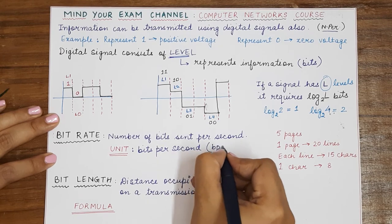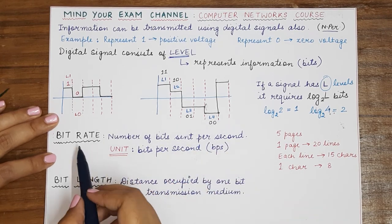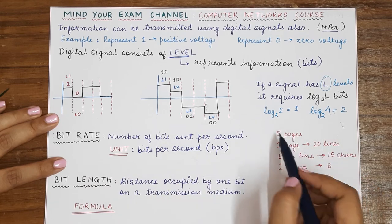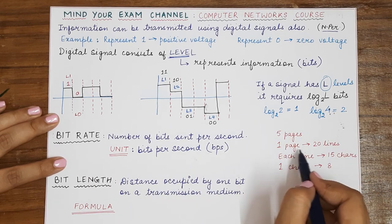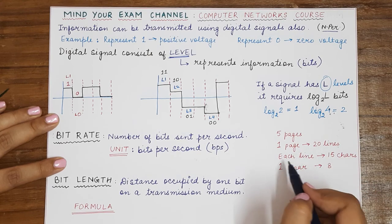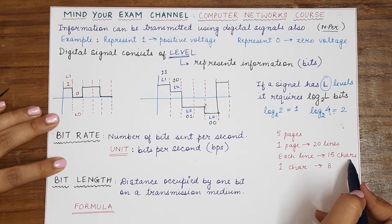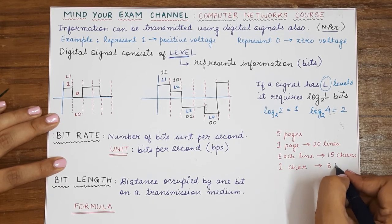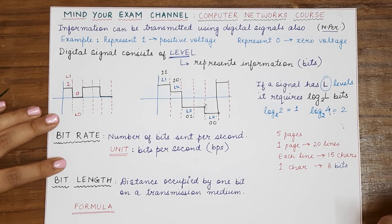That means the amount of information that is transmitted per second and the unit is also bits per second, which is also known as BPS in the short form. So for example, if you have to download five pages from the internet, such that each page consists of 20 lines and each of the line consists of 15 characters, where one character consists of eight bits, so what will be the bit rate?